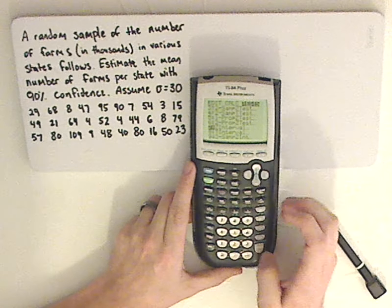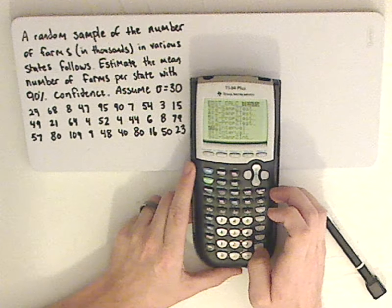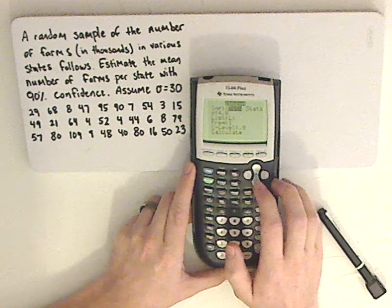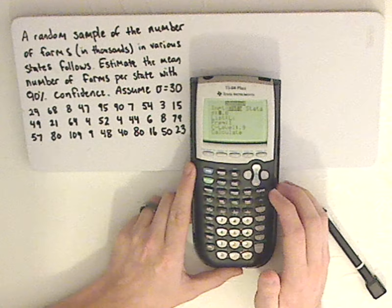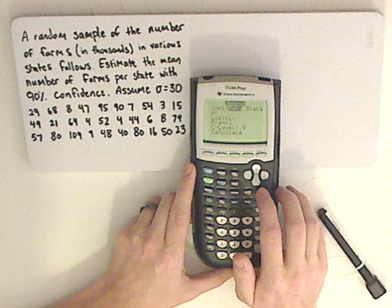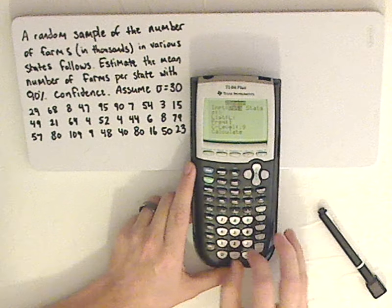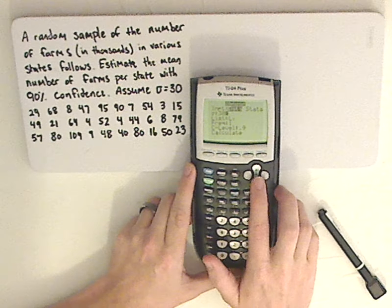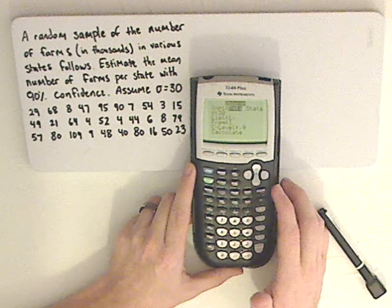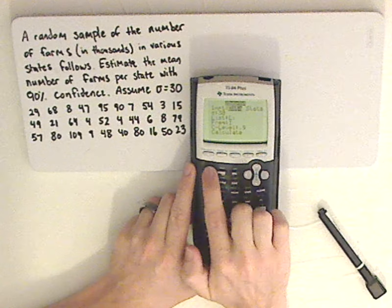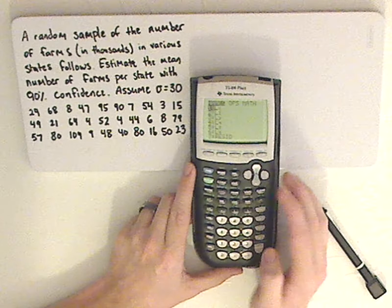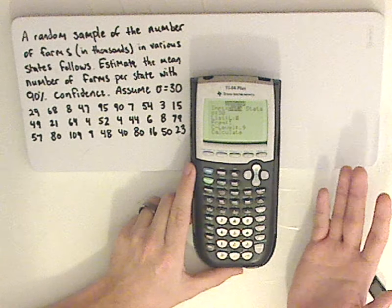And so click on the first Z-interval. Now notice it says data and then it has sigma. If it's not list one, you can push second and then list and then click on list one.